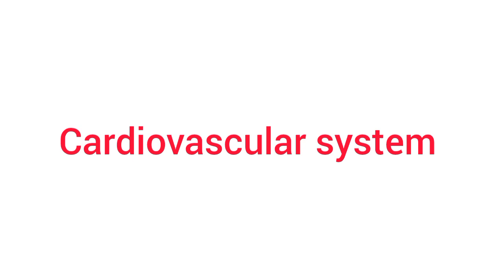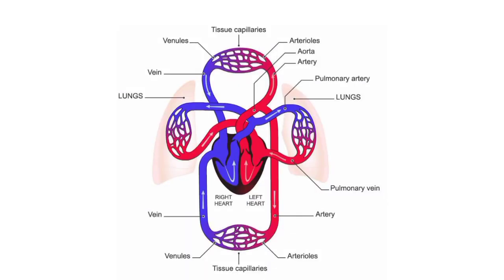The cardiovascular system includes the heart and blood vessels. The heart pumps blood into the blood vessels, which circulate the blood throughout the body. Blood transports nutrients and oxygen to the tissues and removes carbon dioxide and waste products from the tissues.